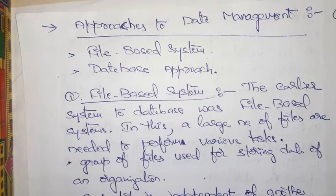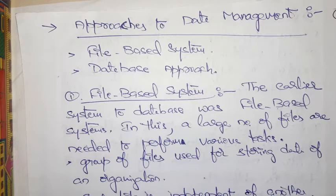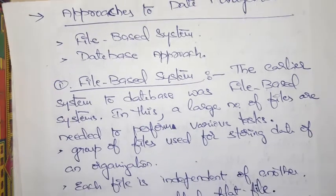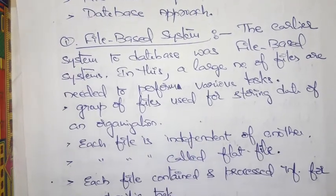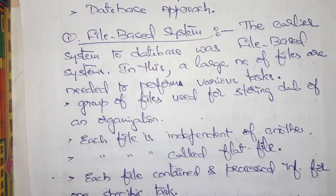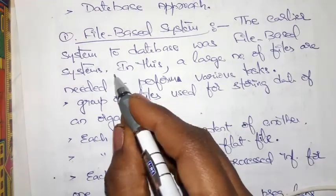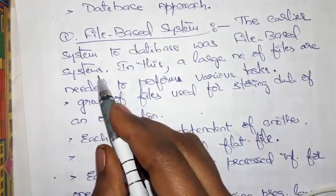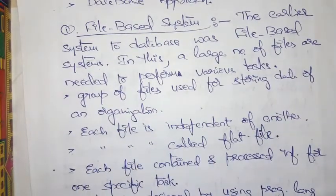Approaches to database management: in this one you are having a file-based system and the next one is a database approach. A file-based system is nothing but a system where every information will be stored in the form of files. This was the earlier system used before database management.